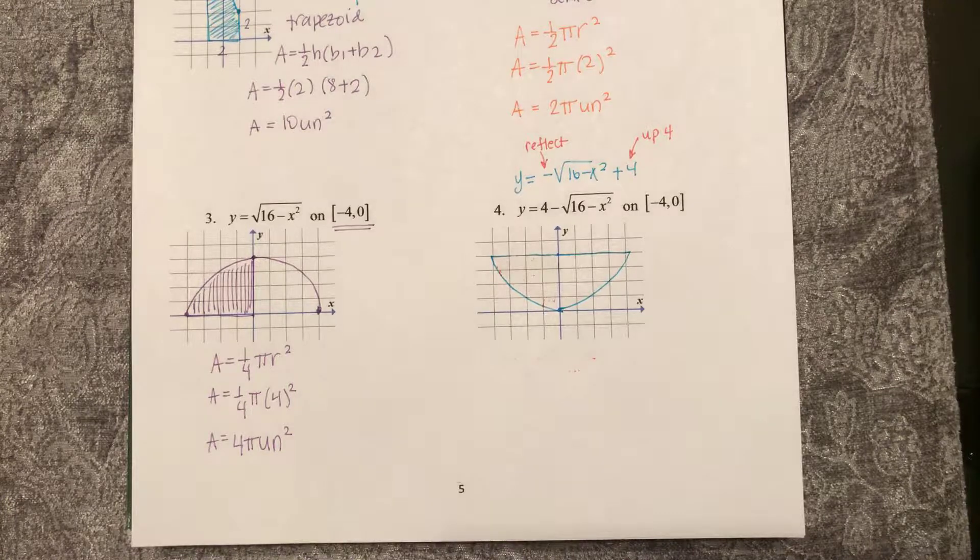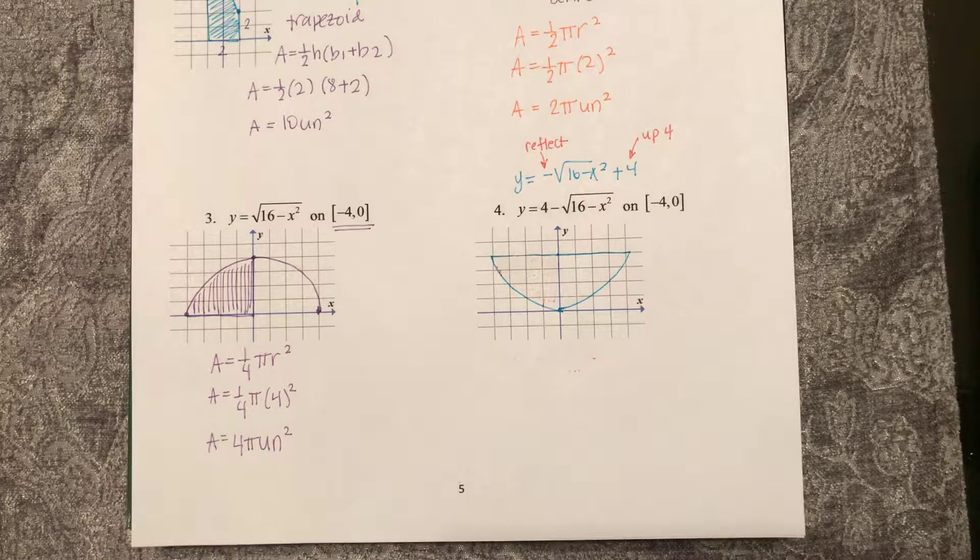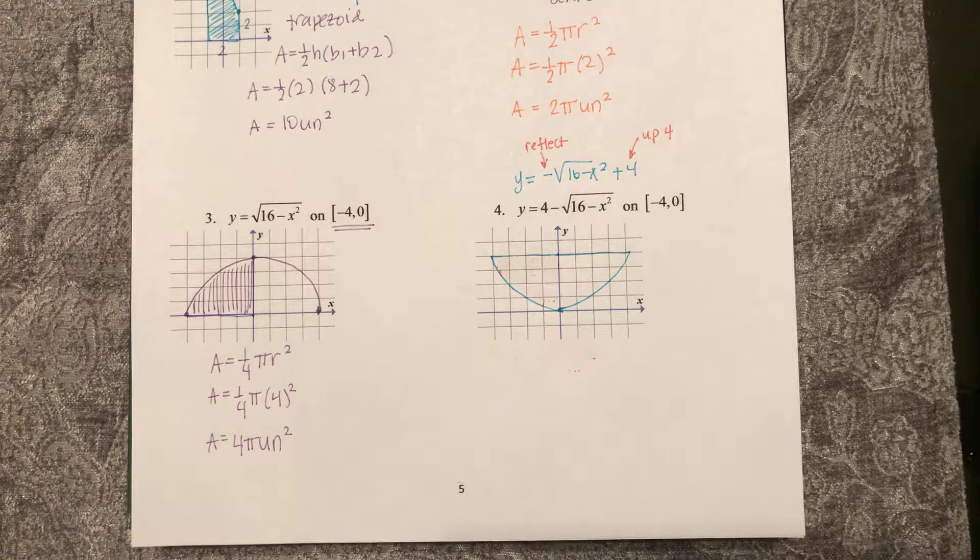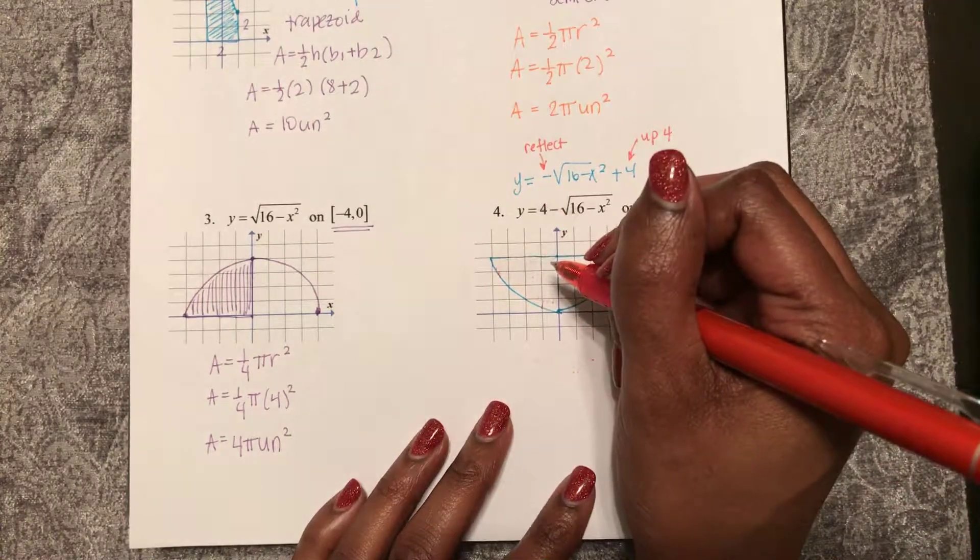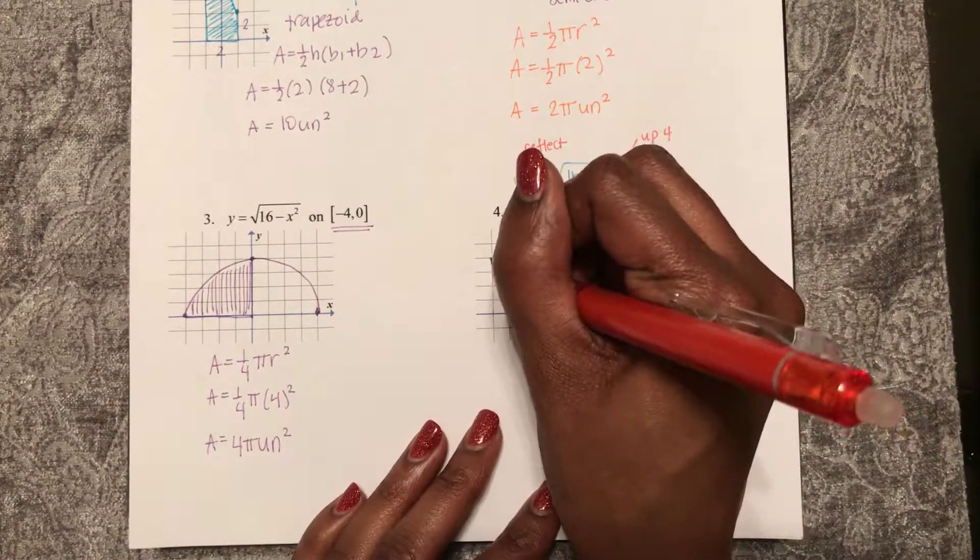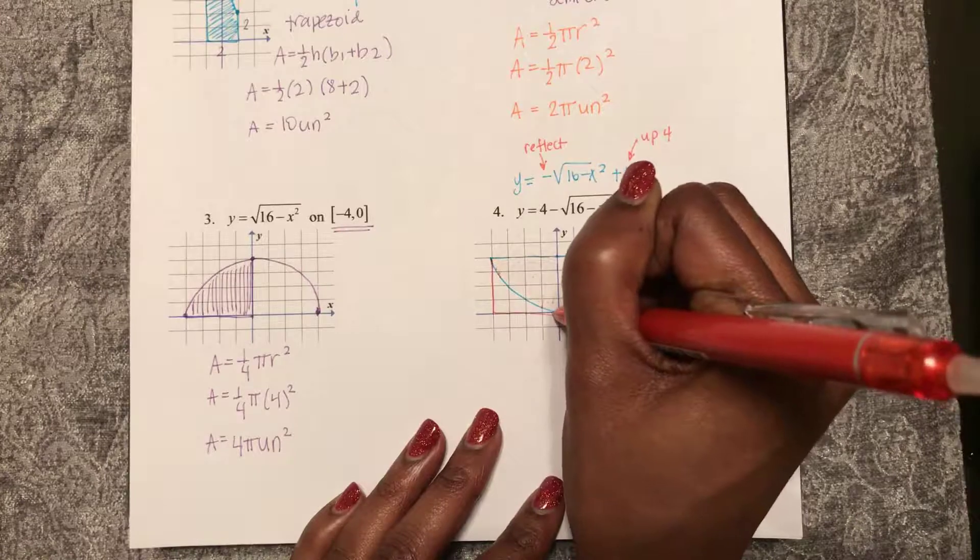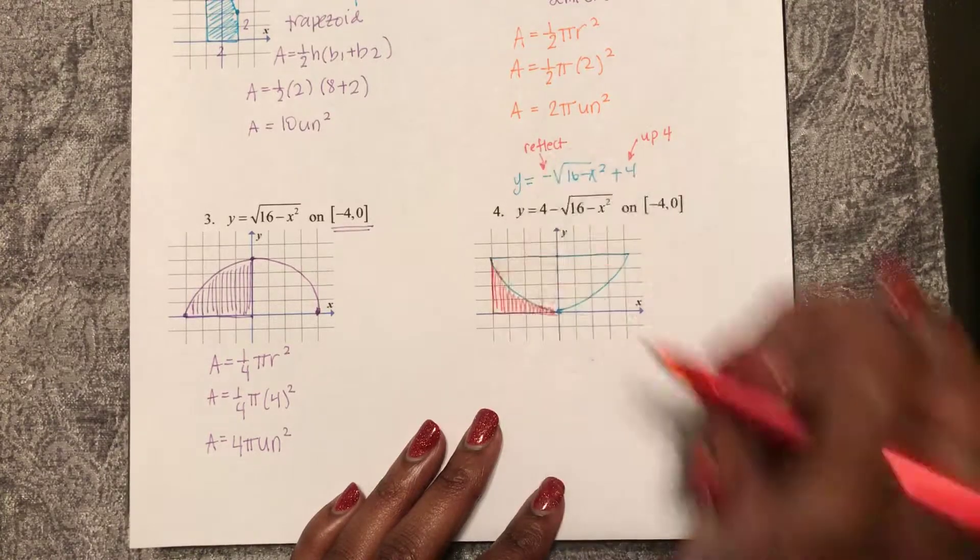Now notice we want to find the area under the curve. So the area under the curve is actually here from negative 4 to 0.